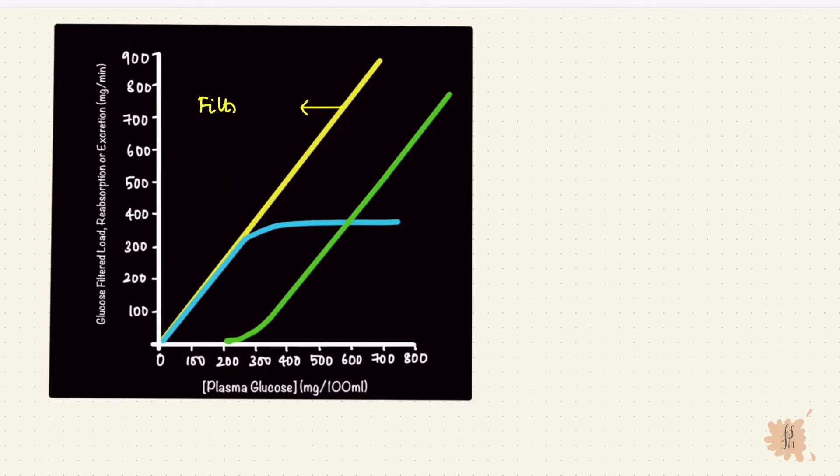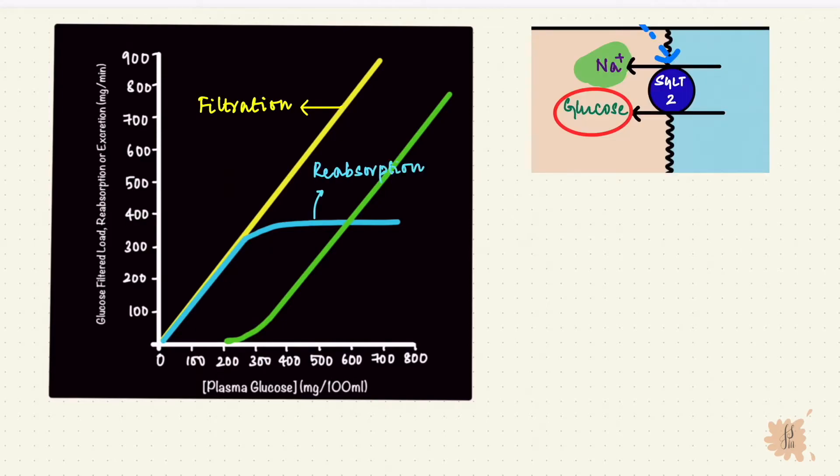Glucose gets filtered by the glomerulus continuously, and the carriers reabsorb it. For substances like this, there is a limit on how much the carriers can reabsorb, and that's called the transport maximum. When the plasma glucose concentration is within its normal limit, so let's say 100 mg per 100 ml, the filter load is 125 mg per minute, so that's normal.